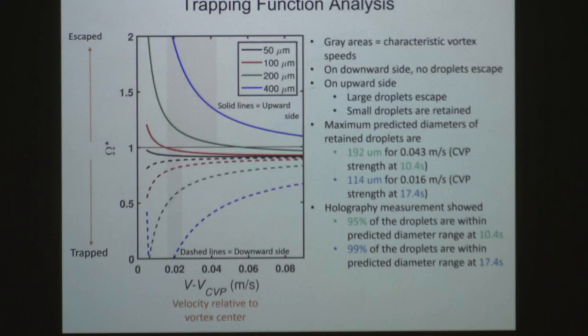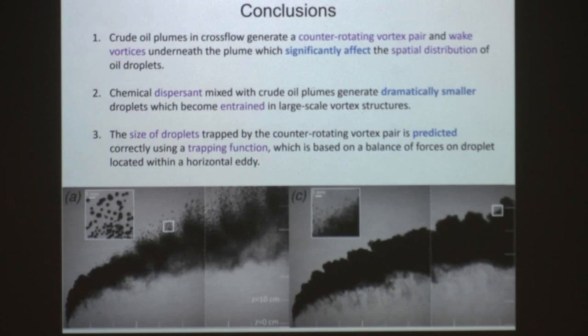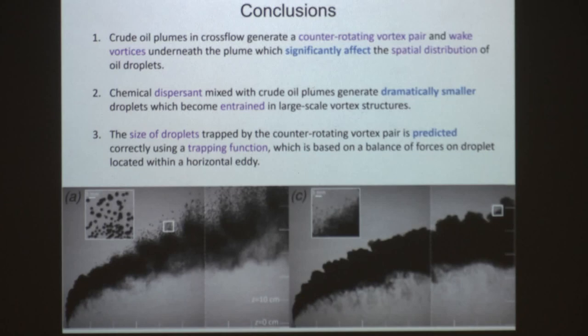To draw a few conclusions: crude oil plumes in a cross flow generate a significant counter-rotating vortex pair and also generate wake droplets beneath the main structure. These vortices really affect the spatial distribution of the droplets. Chemical dispersant mixed into the oil generates much smaller droplets that become entrained in those large-scale vortex structures. Finally, we were able to predict the size of droplets trapped within these vortices based on this balance of forces.